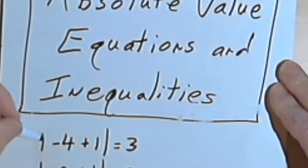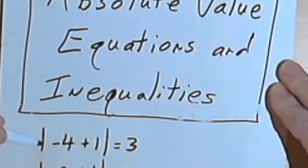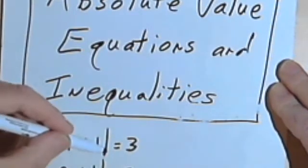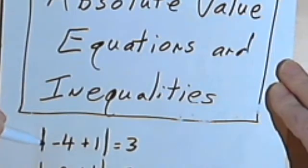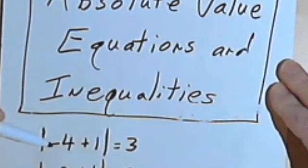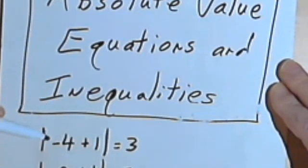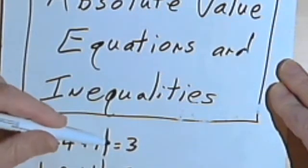Here I've written negative 4 plus 1, and that negative 4 plus 1 is in between these two upright lines. And then I've got equals 3. This is an absolute value equation, and we read this as the absolute value of negative 4 plus 1 equals 3.